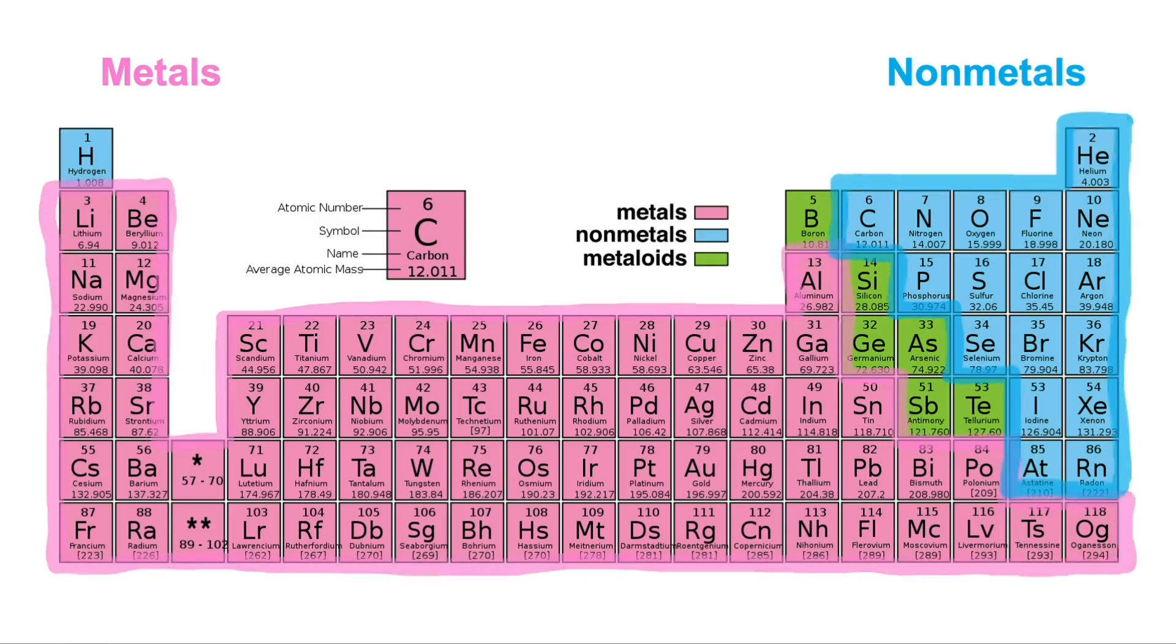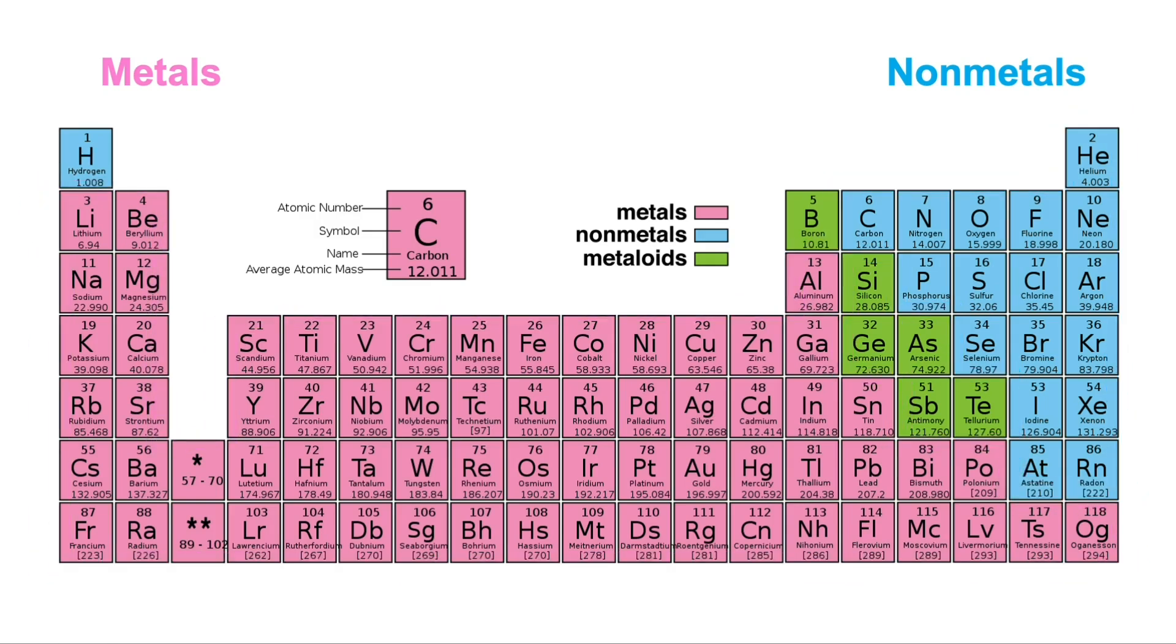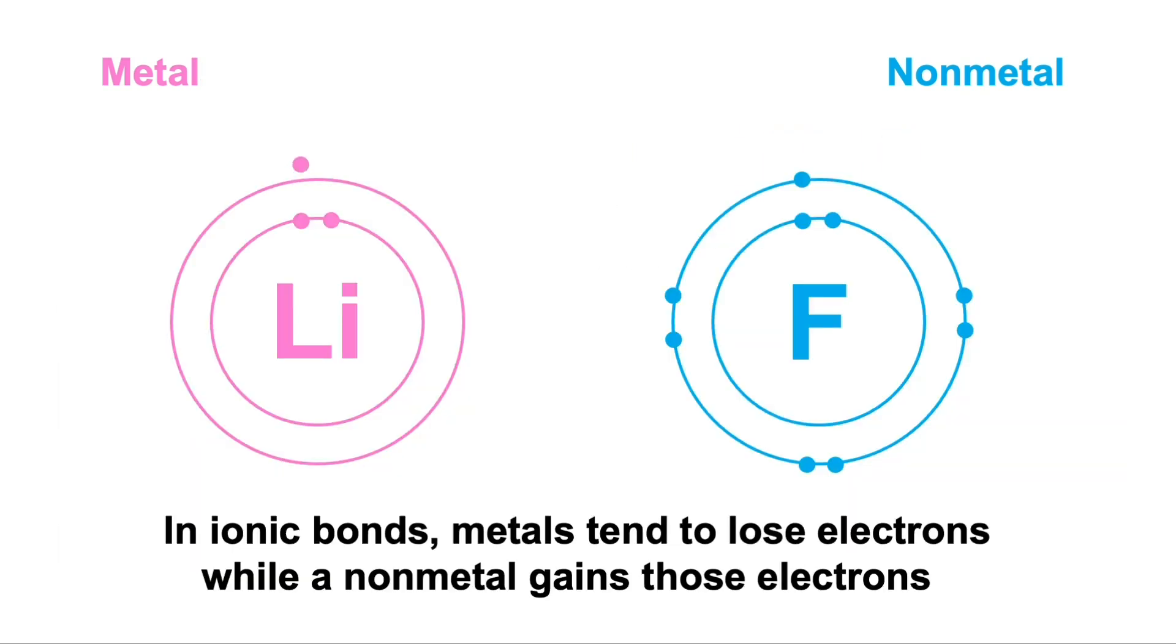Metals on the left, non-metals on the right. Set the hydrogen, let's pretend it's on the right. Metals tell me lose, clear the shell, get a plus charge. Find a non-metal, wanna fill that shell electron.